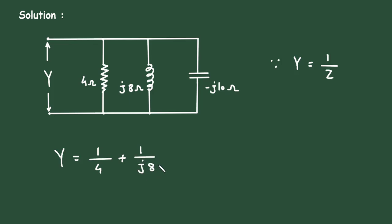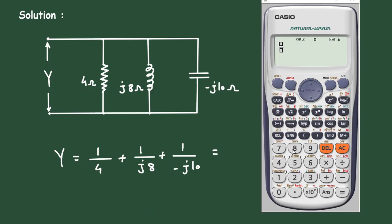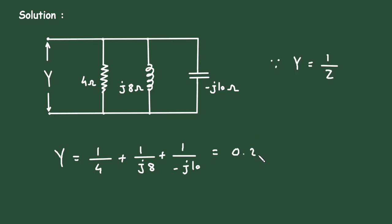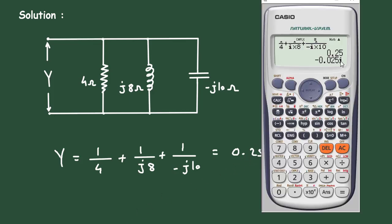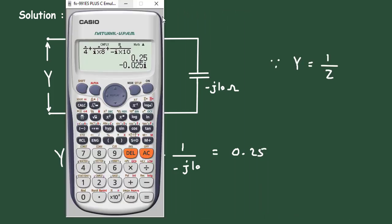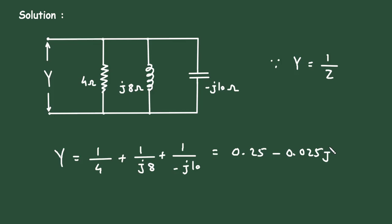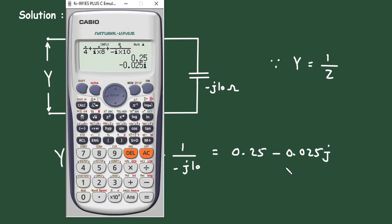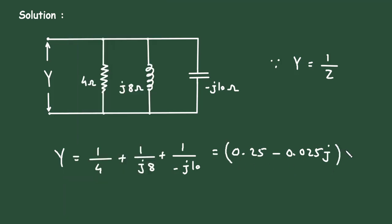...plus 1 upon minus j10. Solving this: 1/4 + 1/(j8) + 1/(-j10) equals 0.25 minus 0.025j minus 0.025j. Since this is the value of admittance, its unit will be Siemens.